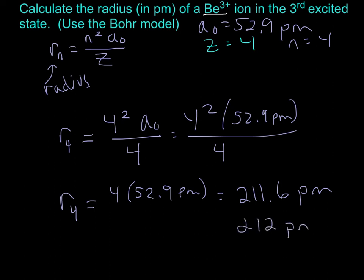That's how you calculate the radius for a given Bohr orbit for a given ion. Of course, if this were hydrogen, which you'll often be asked questions about, Z would just be 1, so you'd only need n and a₀.